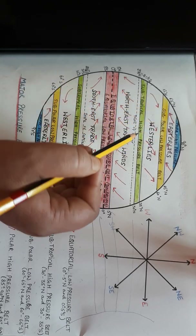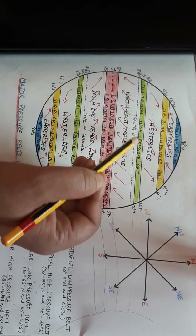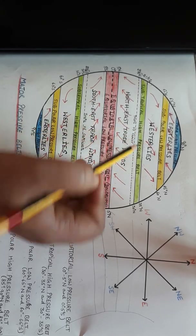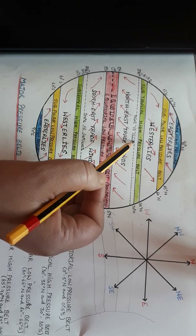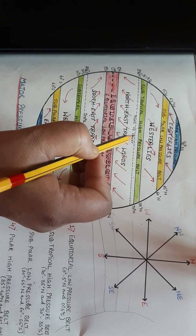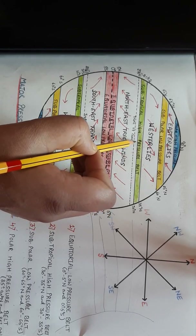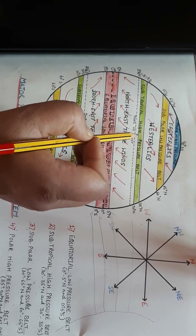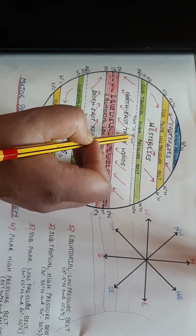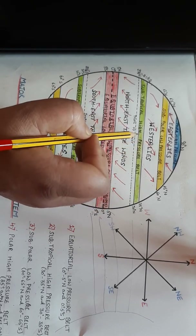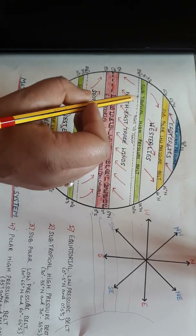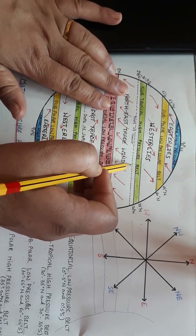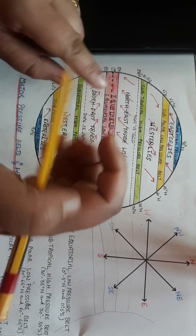Now, what is the reason for having a high pressure belt here? Pressure is affected by temperature. At 30 degrees latitude, which is not far from the equator, temperature is comparatively higher — so based on temperature alone, pressure should be low. But this is not the exact situation. The pressure here is actually high, and we call it the subtropical high pressure belt.